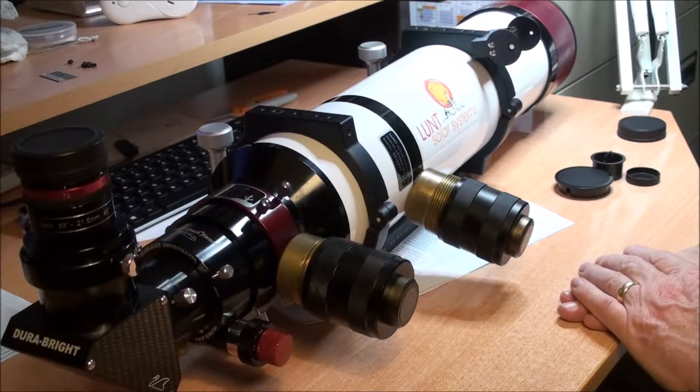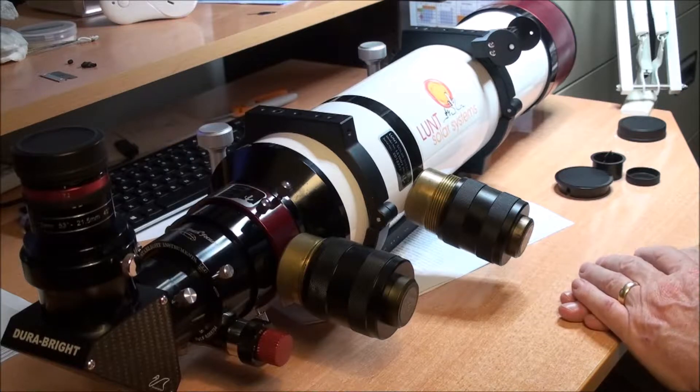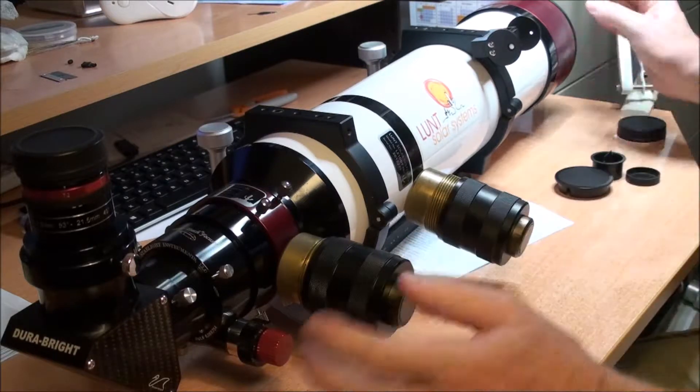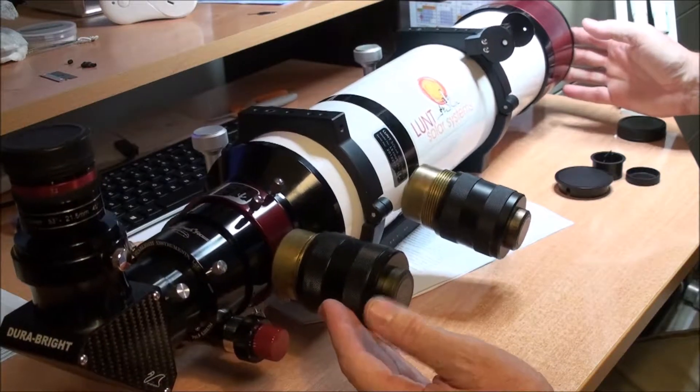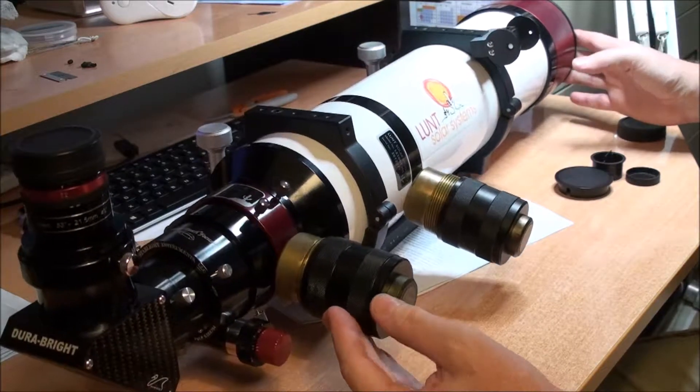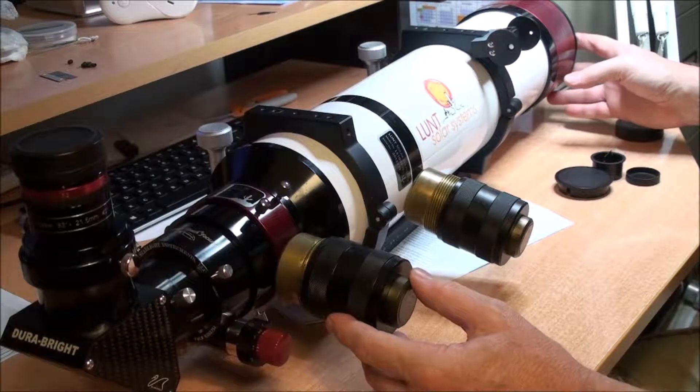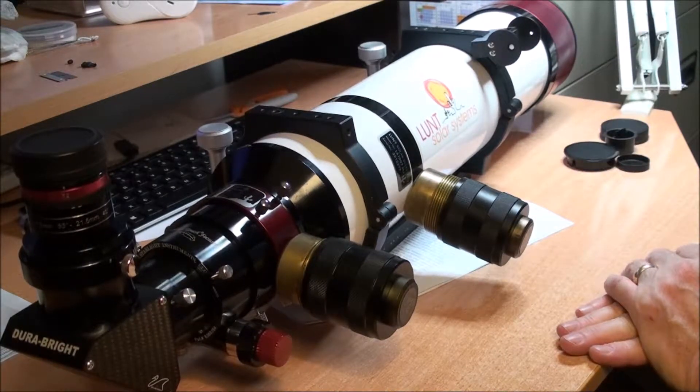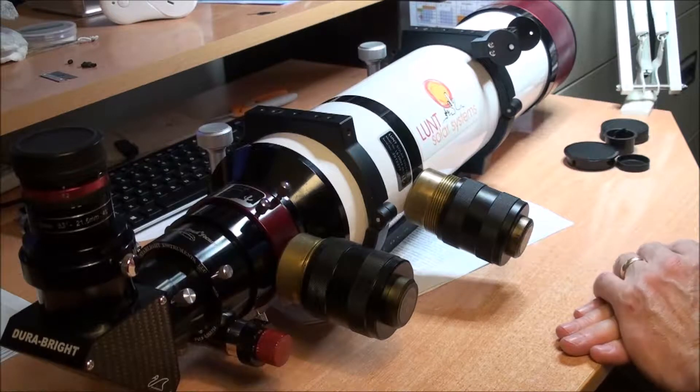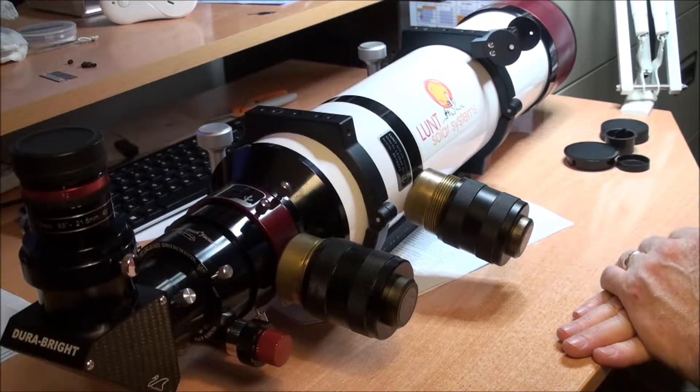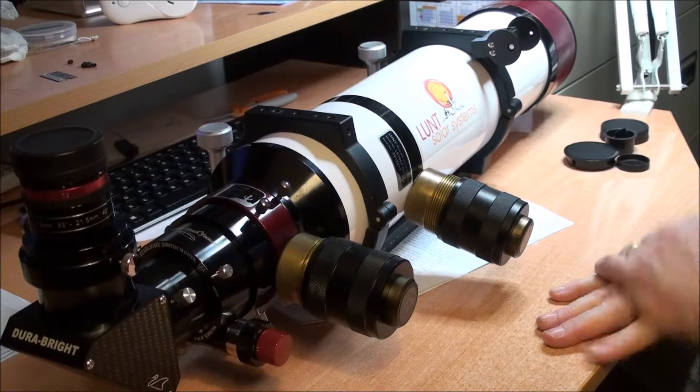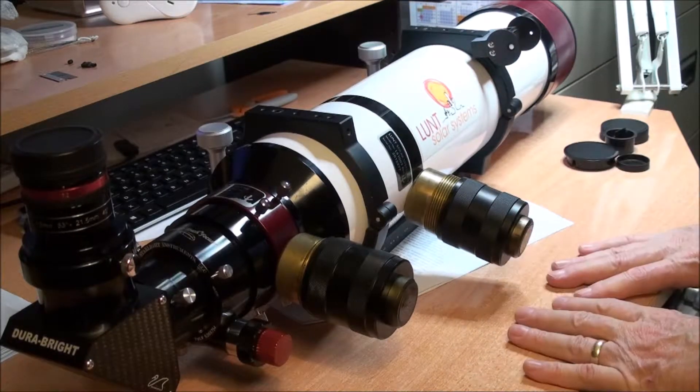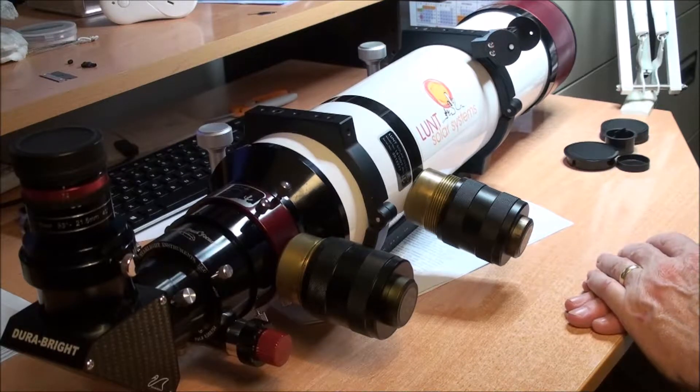Welcome to Lesson 1 in a series of How to Love Your Lunt. This magnificent instrument is the LS100THA Double Stacked, an absolutely magnificent beast. They're not always massively obvious as to how to use them, so I'm going to rather scarily dismantle this one and put it back together in front of you. I'm not going to completely dismantle it, but you'll soon see what I mean.